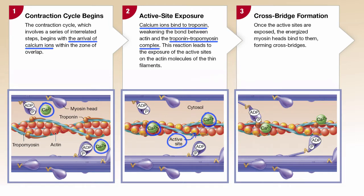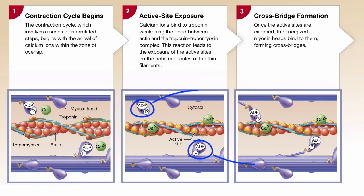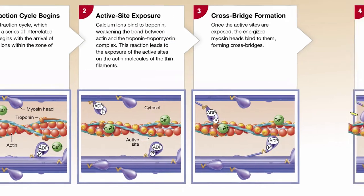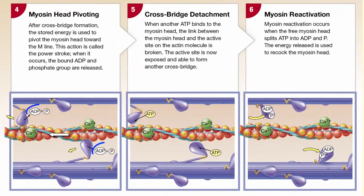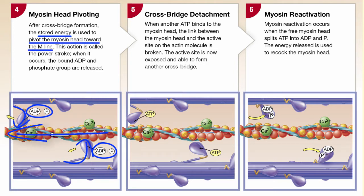Now that these sites are available, myosin heads of the thick filaments bind to them, forming cross bridges. Energy is stored in the myosin heads in the form of ADP and phosphate, and this energy is utilized to pivot the myosin heads towards the M-line, the center of the sarcomere.